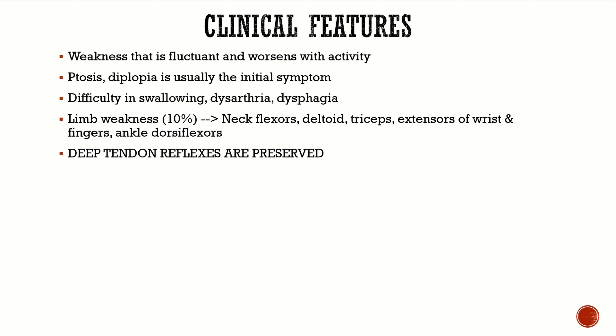The classical description of myasthenia gravis is fluctuating weakness that worsens with activity or worsens throughout the day — the patient is fine in the morning but weakness increases with exertion. Initial symptoms are restricted to bulbar or cranial muscles, with ptosis and diplopia being predominant. By two to three years, 80–85% of patients develop generalized weakness.